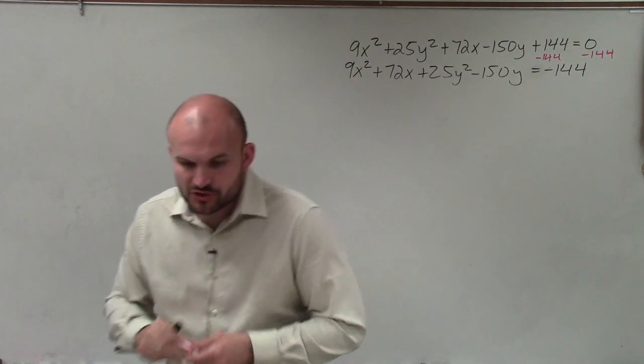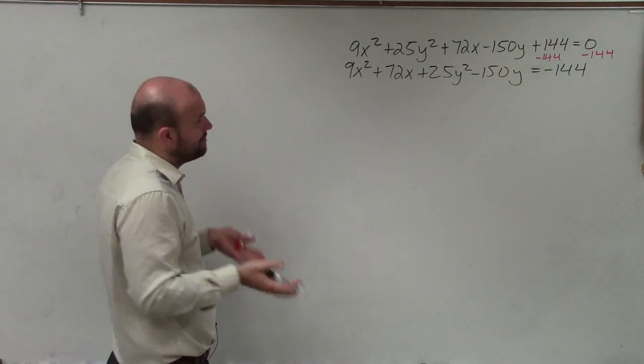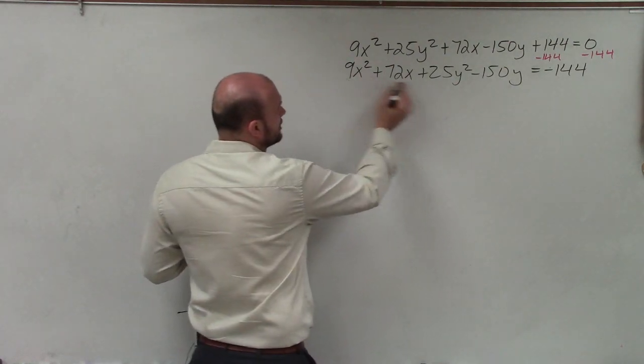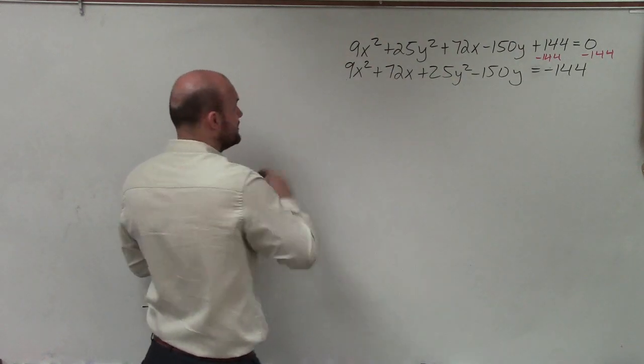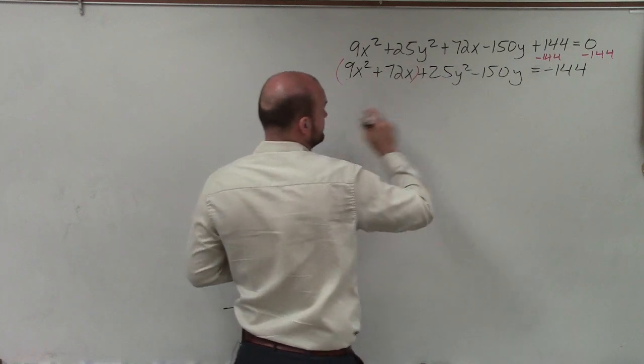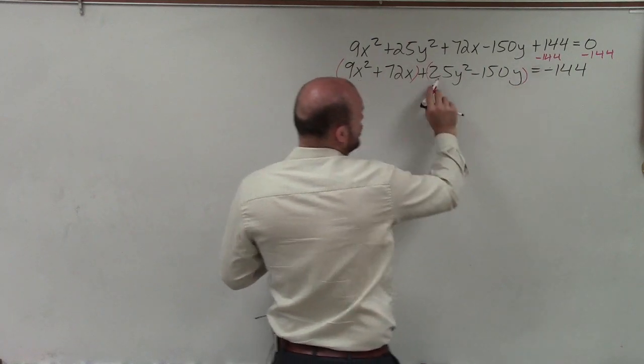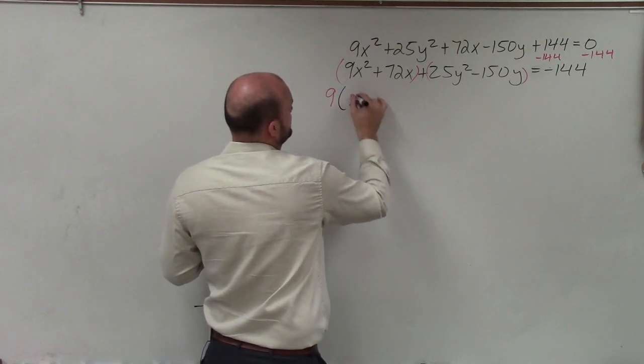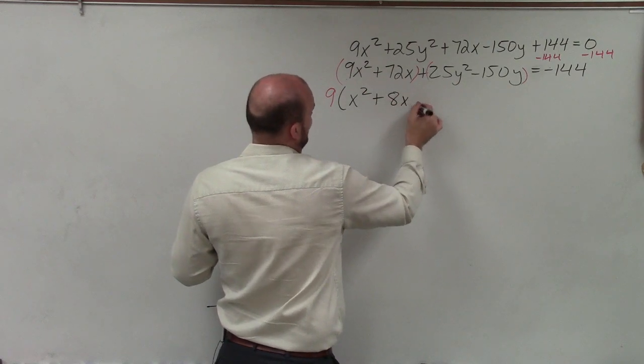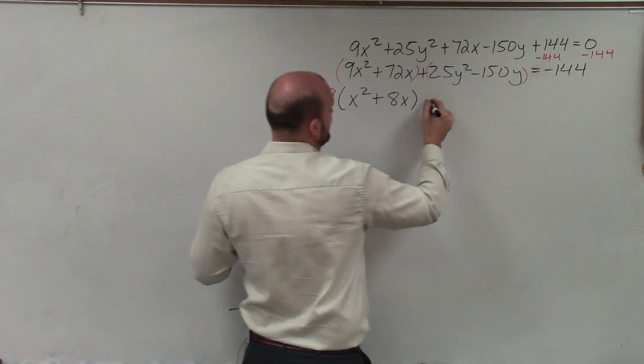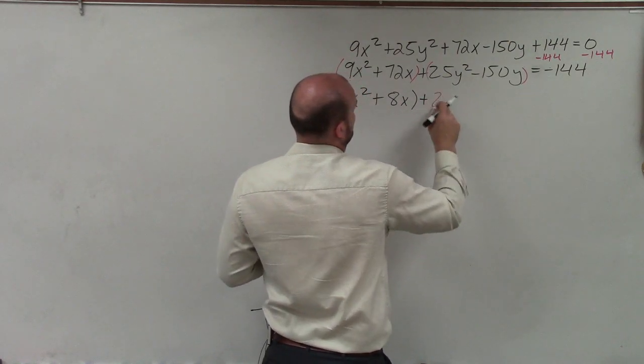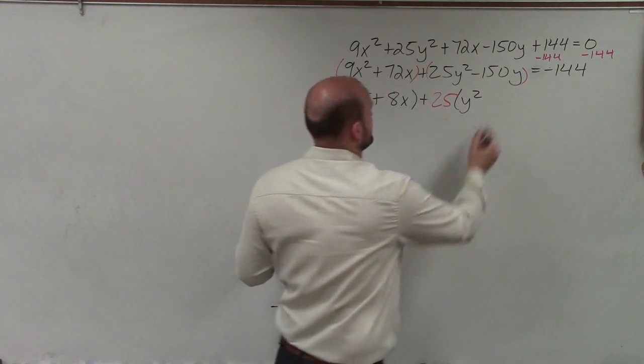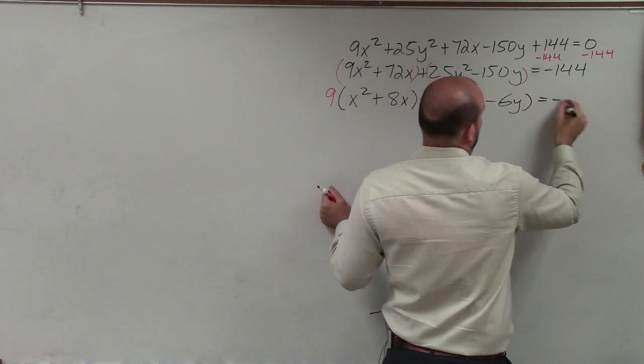Now to write binomial squared, we've got to create perfect square trinomials. To create perfect square trinomials, we've got to complete the square. The first step in completing the square is getting your quadratic terms having a coefficient of 1. So I'm going to factor out the coefficients of my quadratic terms. I'm going to factor out a 9, which leaves me with x² + 8x. Then I can factor out a 25, and that's going to leave me with y² - 6y equals negative 144.